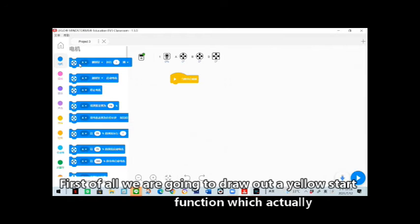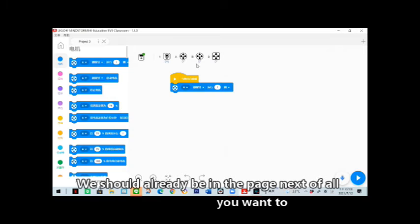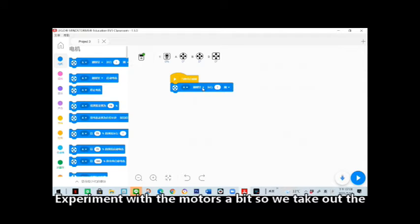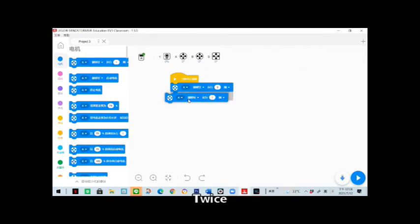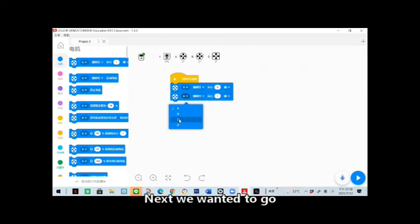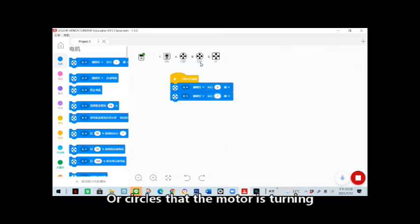Now we can go ahead and test the new programs. First of all, we are going to draw out a yellow start function which actually should already be in the page. Next, we want to experiment with the motors a bit, so we take out the blue motor brick. You can see the indicated motor is A and what we want it to do is spin two times. Next we want it to spin on the B motor and spin twice. It's the same amount of rounds or circles that the motor is turning.